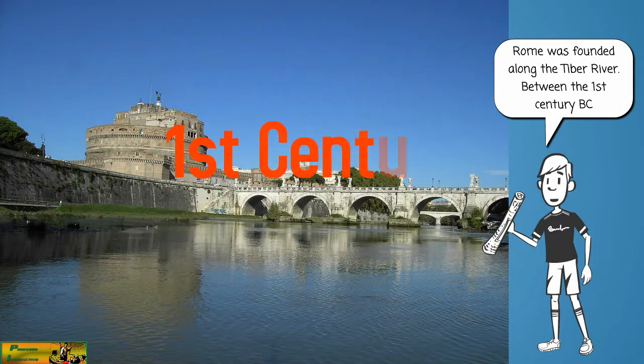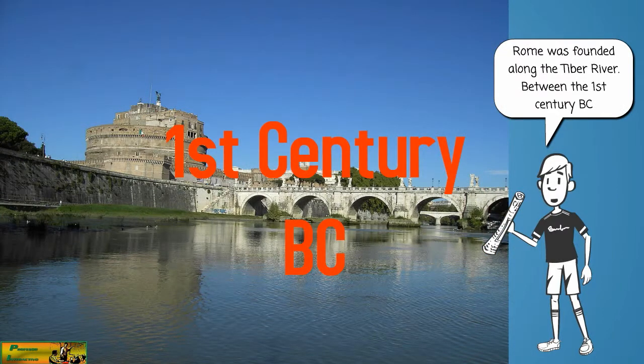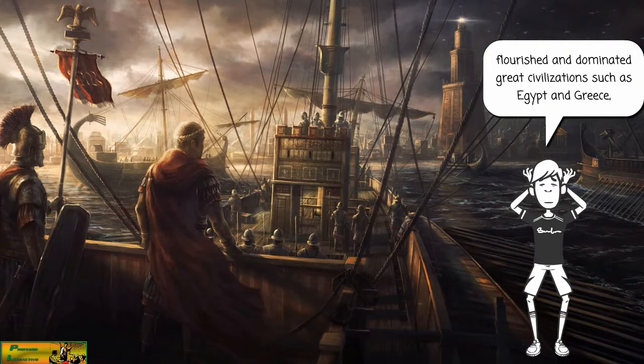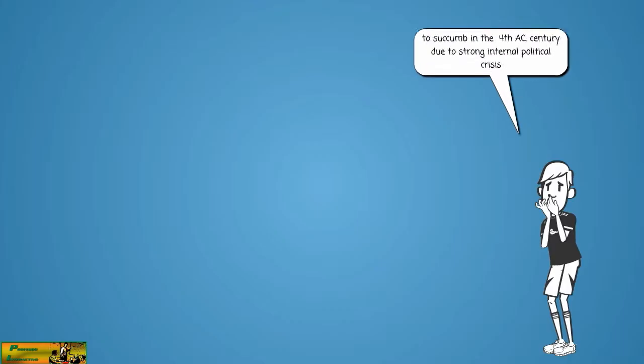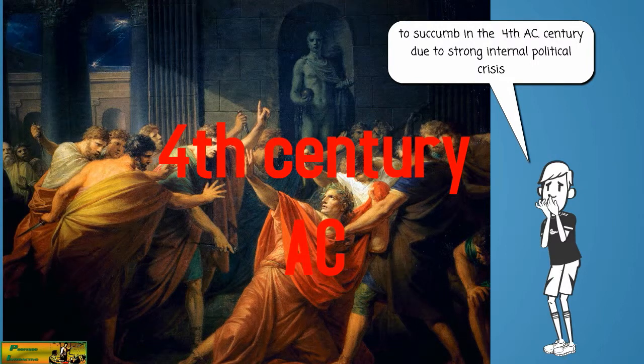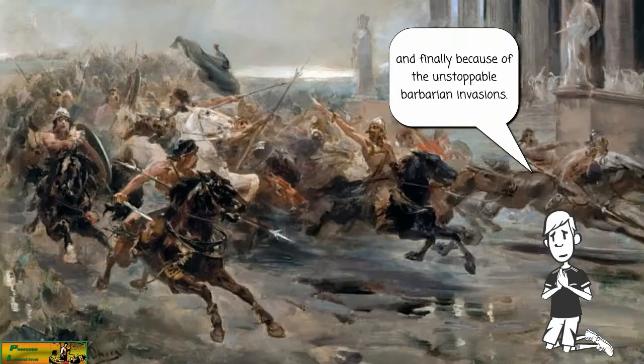Rome was founded along the Tiber River between the first century BC, flourished and dominated great civilizations such as Egypt and Greece, to succumb in the 4th century AC due to strong internal political crisis and finally because of the unstoppable barbarian invasions.